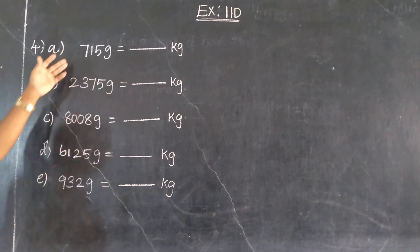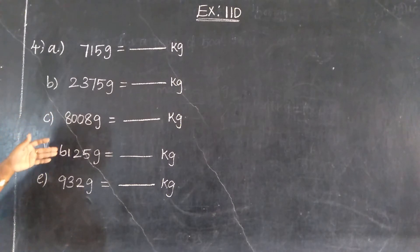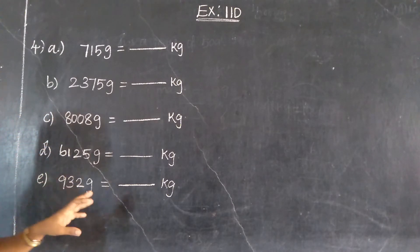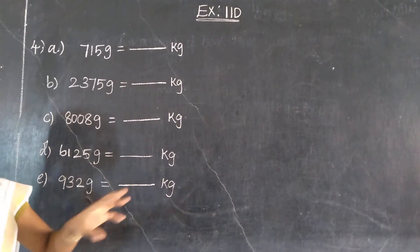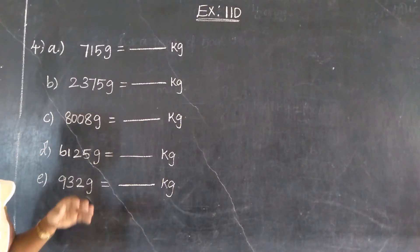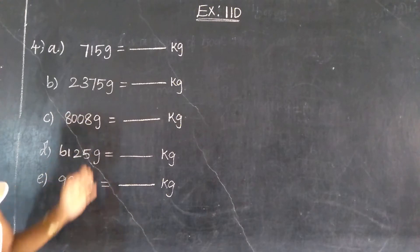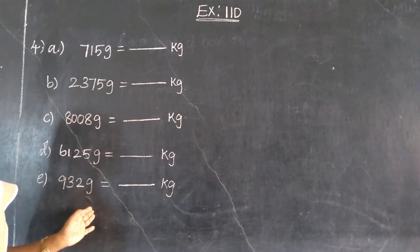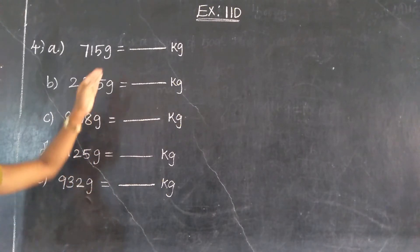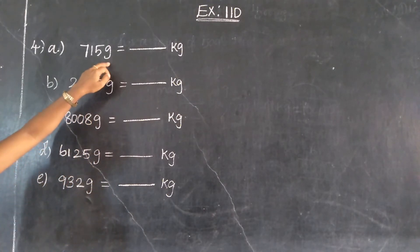Then this is 1, 2, 3, 4, 5. So 5 values that you transfer. So these 5 values are equal measurements. It is equal measurements.